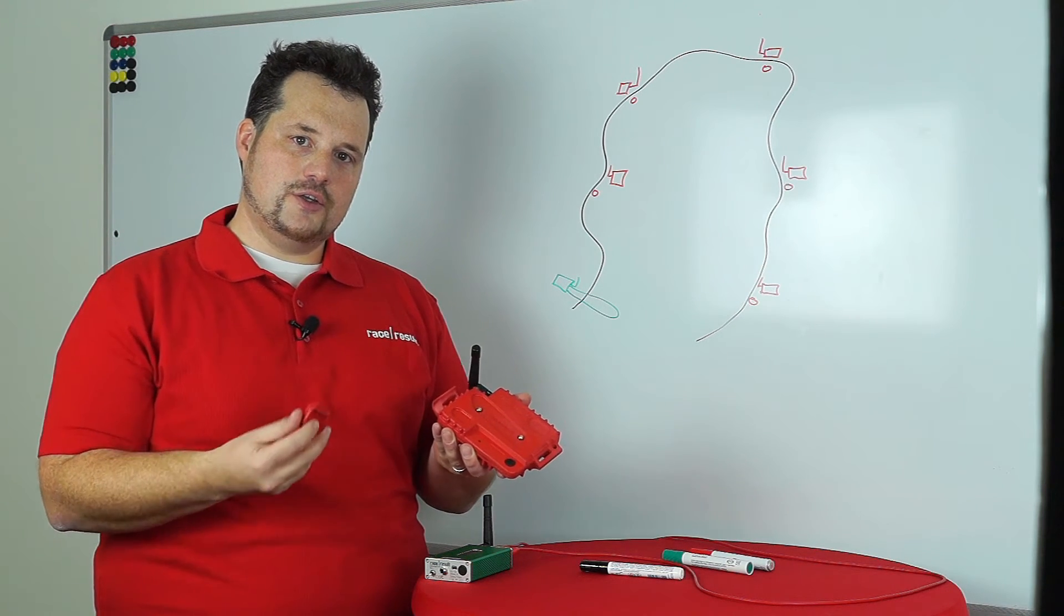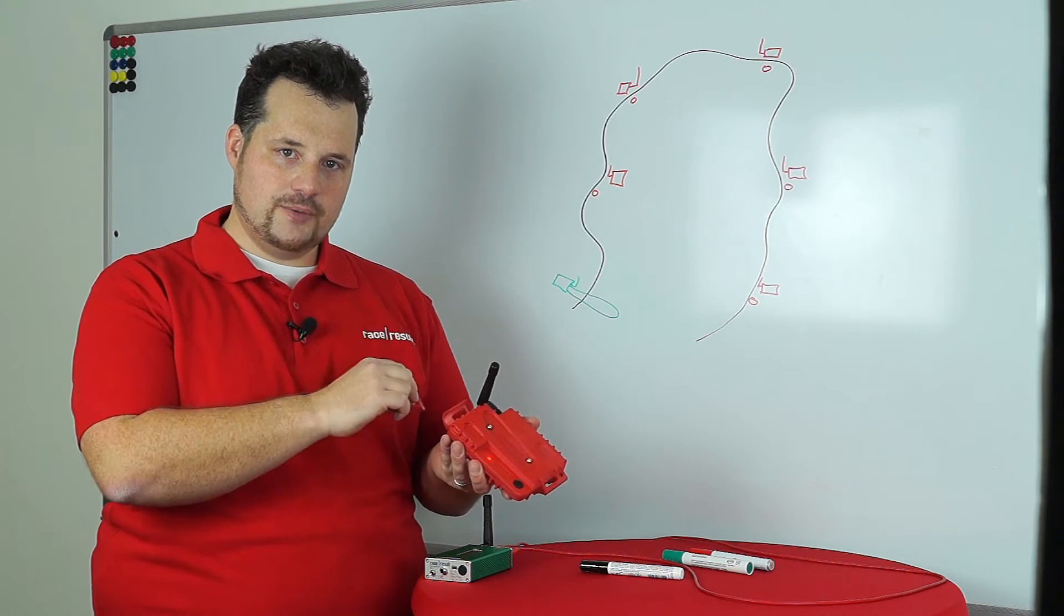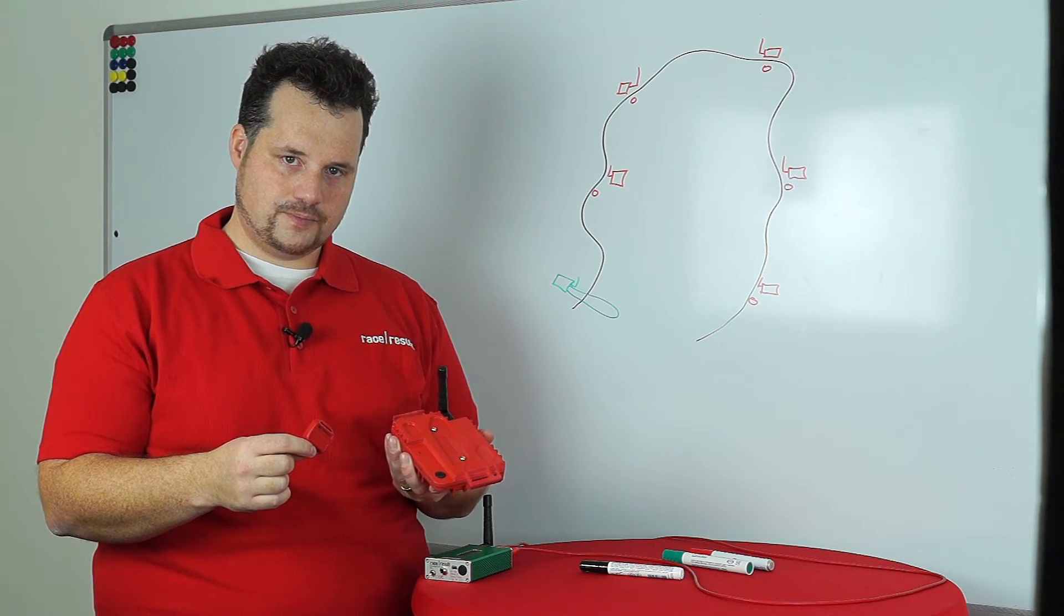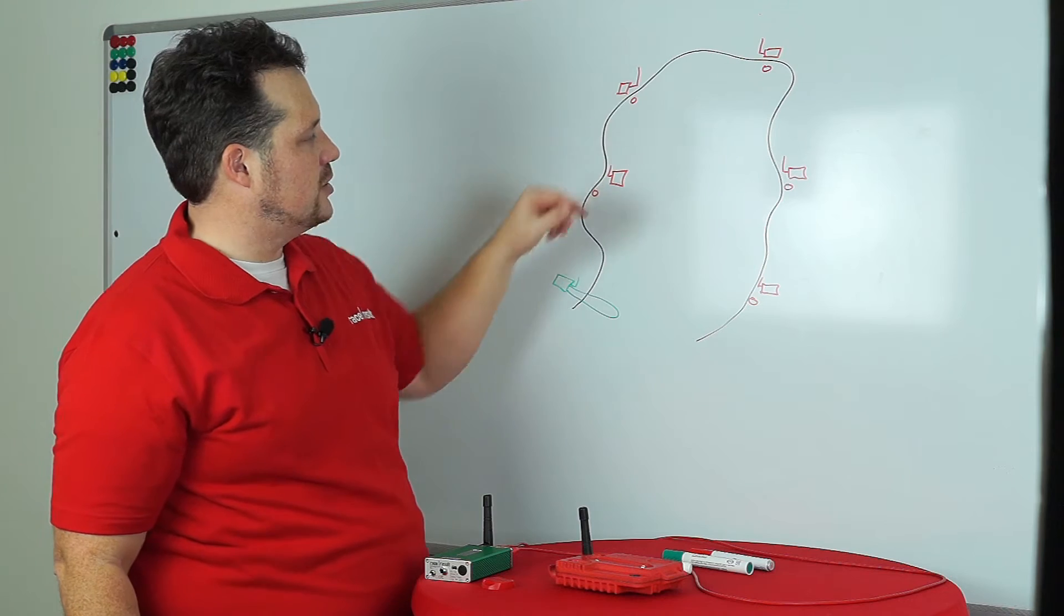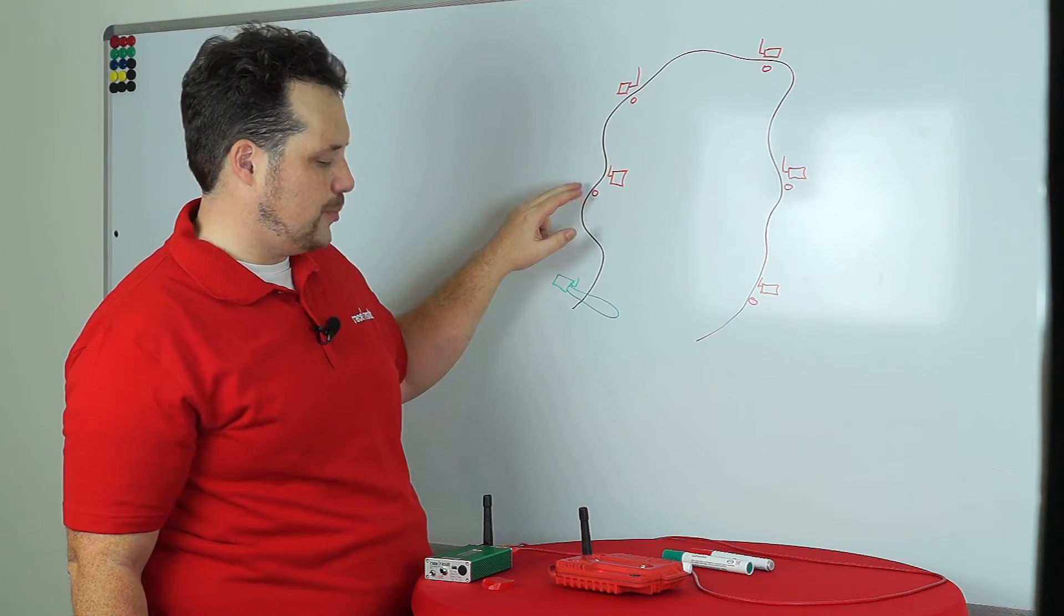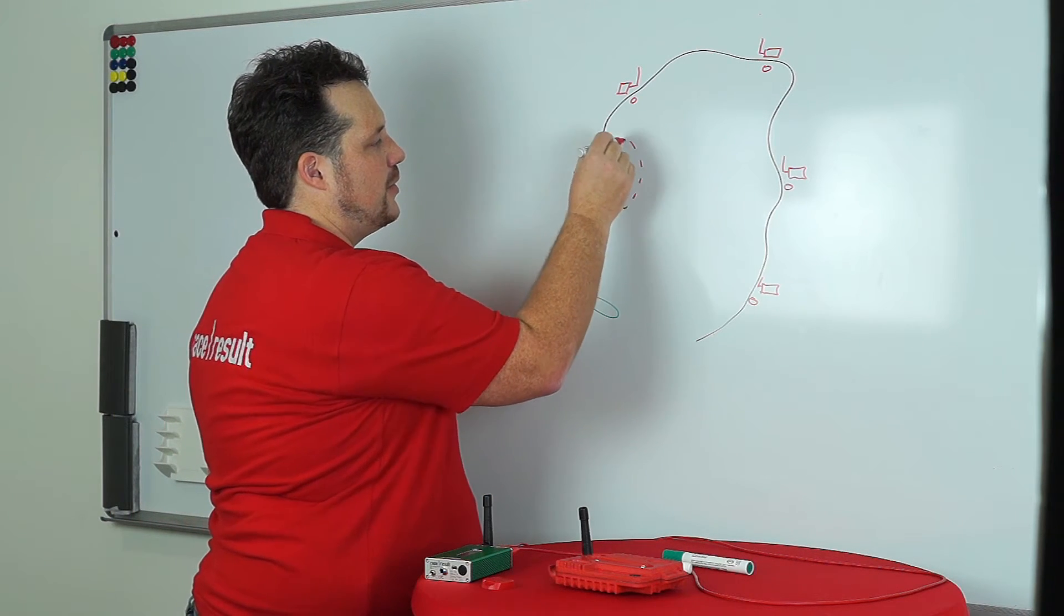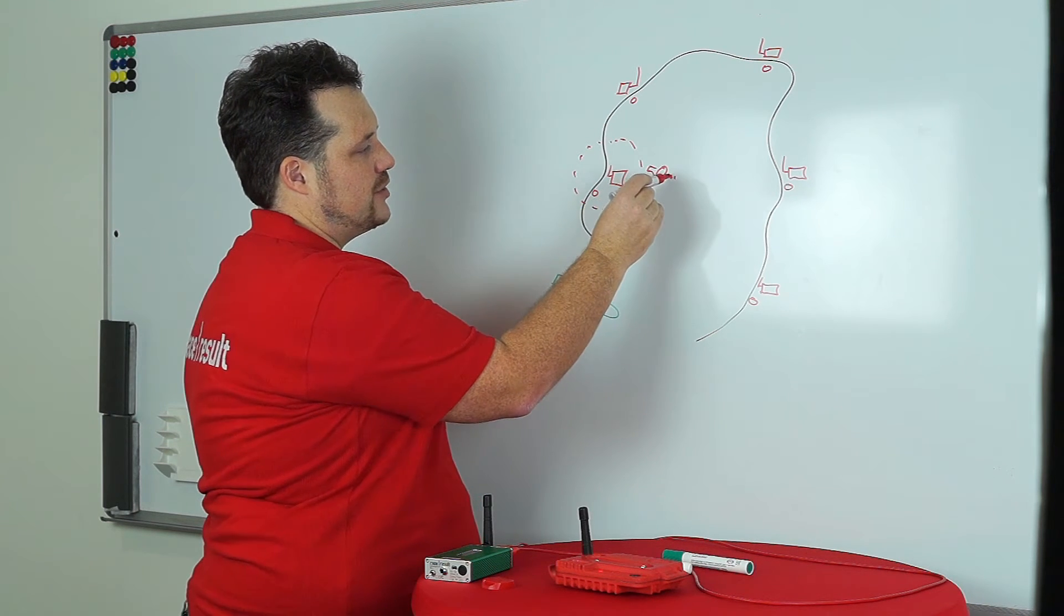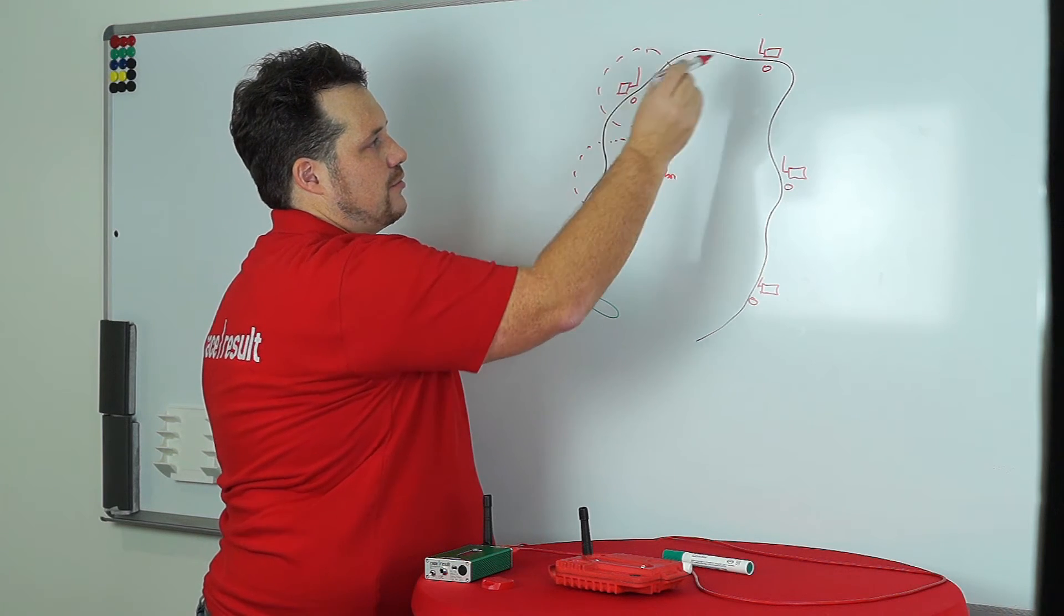And generating a new data entry for every transponder that comes by with its location and the current time. So you can see this here. You see a track with multiple track boxes scattered around the track. And every time a transponder comes into an approximately 50 meter radius about a box, it will be received by the box and the box will start generating data.